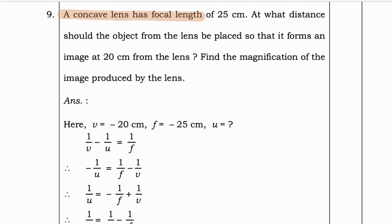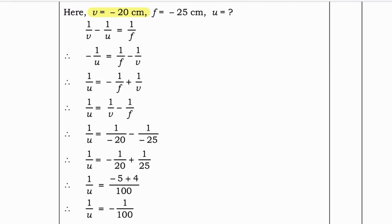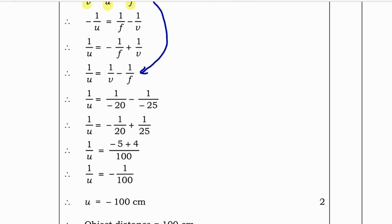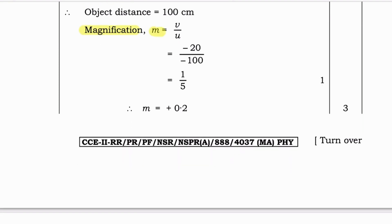Next question: A concave lens has a focal length of 25 cm. At what distance should the object be placed from the lens so that it forms an image at 20 cm from the lens? Find the magnification. Given: v = -20 cm, f = -25 cm. Using the lens formula 1/v - 1/u = 1/f, rearranging to find u, we get u = -100 cm. Magnification m = v/u = -20/-100 = +0.2.